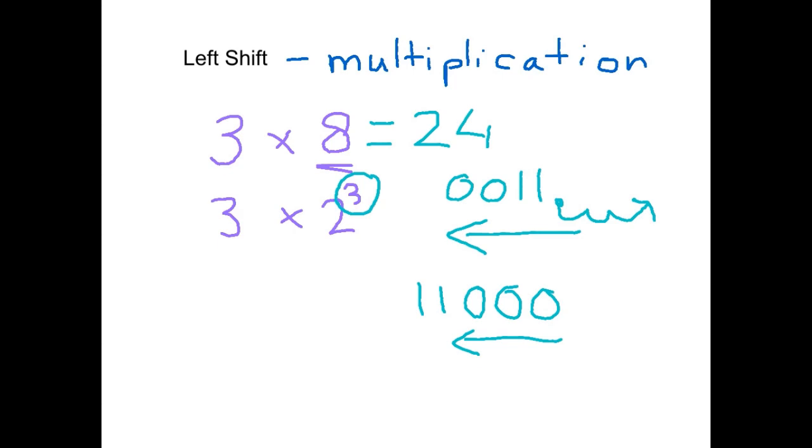That means that if we look at our position values, we've got one, two, four, eight, and 16. 16 plus eight is equal to 24. So we've shifted it to the left three, which is our power.